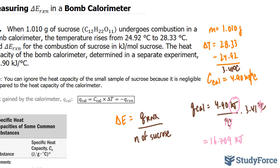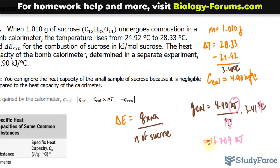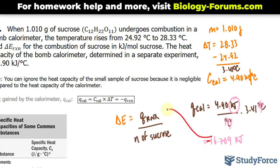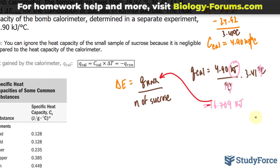16.709 kilojoules. Remember, the heat absorbed by the bomb calorimeter equals the heat released by the sucrose molecule. This number right here should be negative. Once we find this number, we can substitute it into this formula to find delta E.